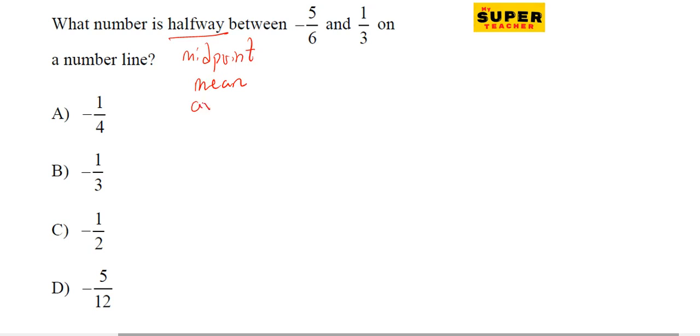So we can find the average of minus 5 over 6 and 1 over 3. What we do is add this together and divide by 2.